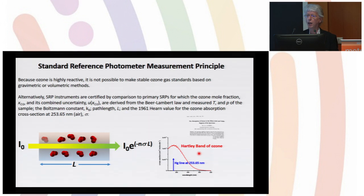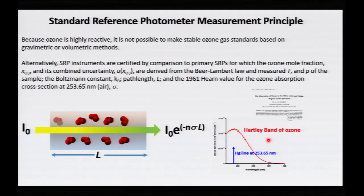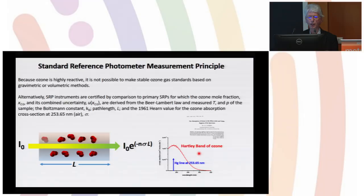We decided it was about time to reassess this cross-section value in light of recent measurements and try to provide a consensus value which has a lower uncertainty. Essentially it's based on a Beer-Lambert law.